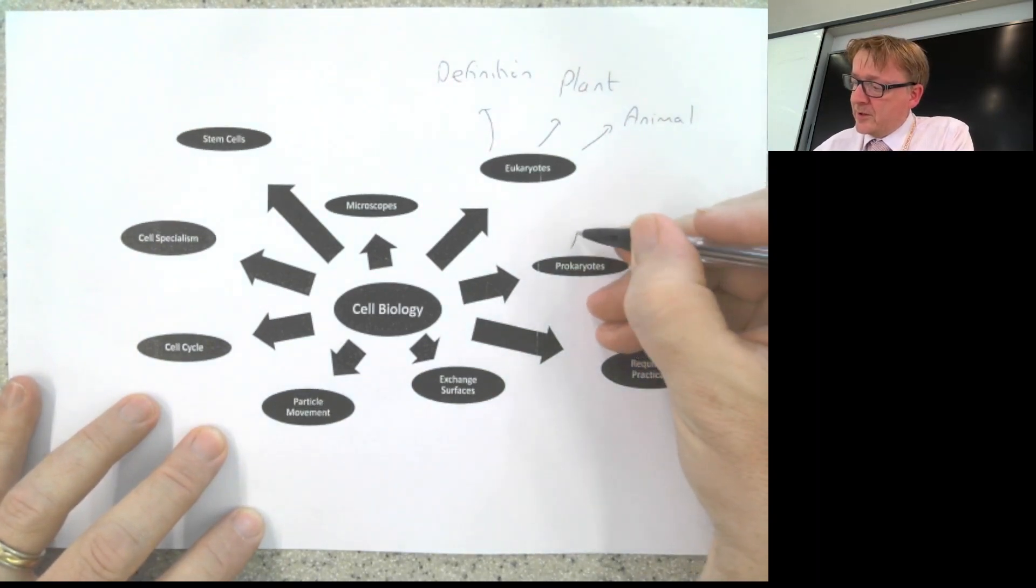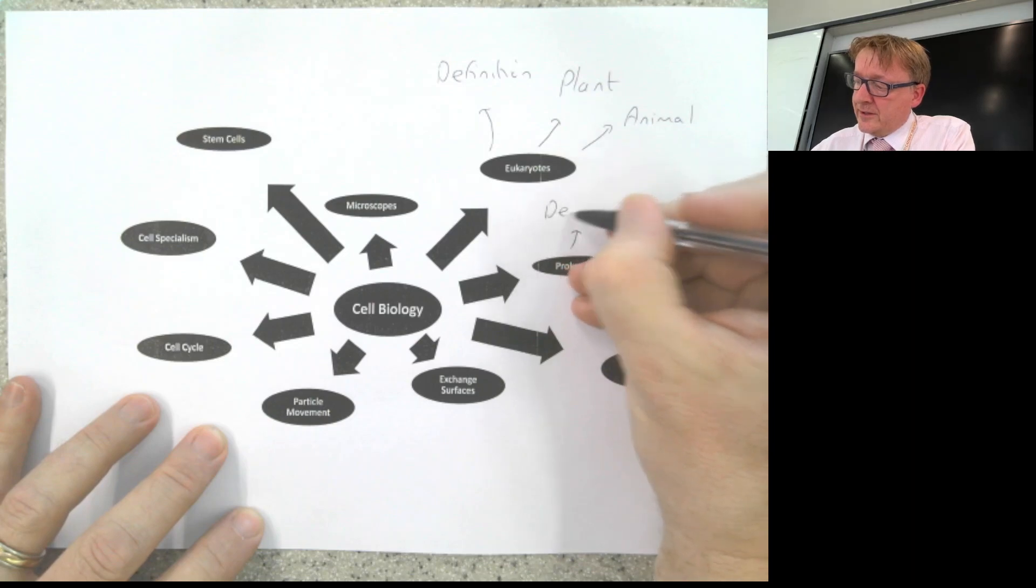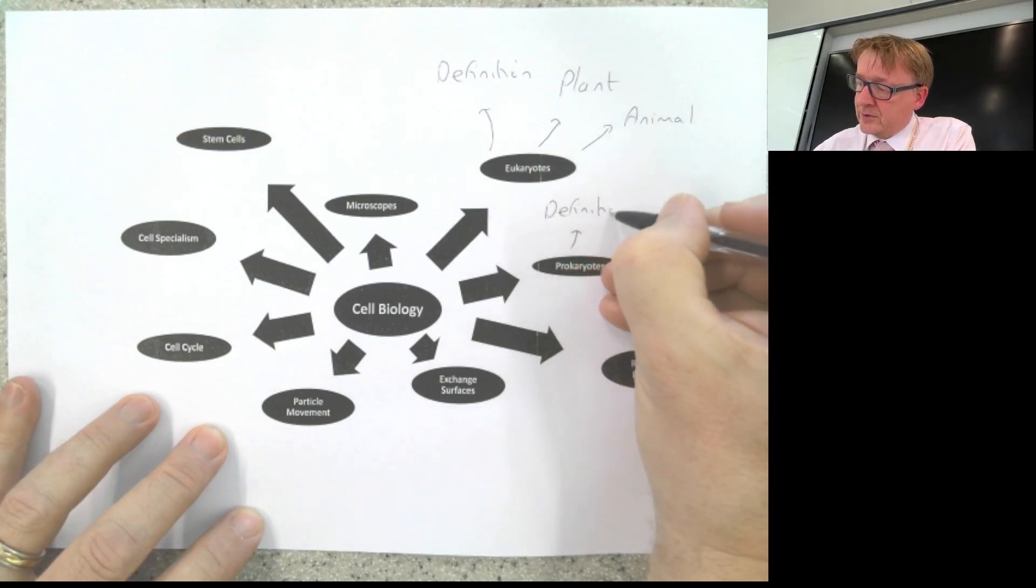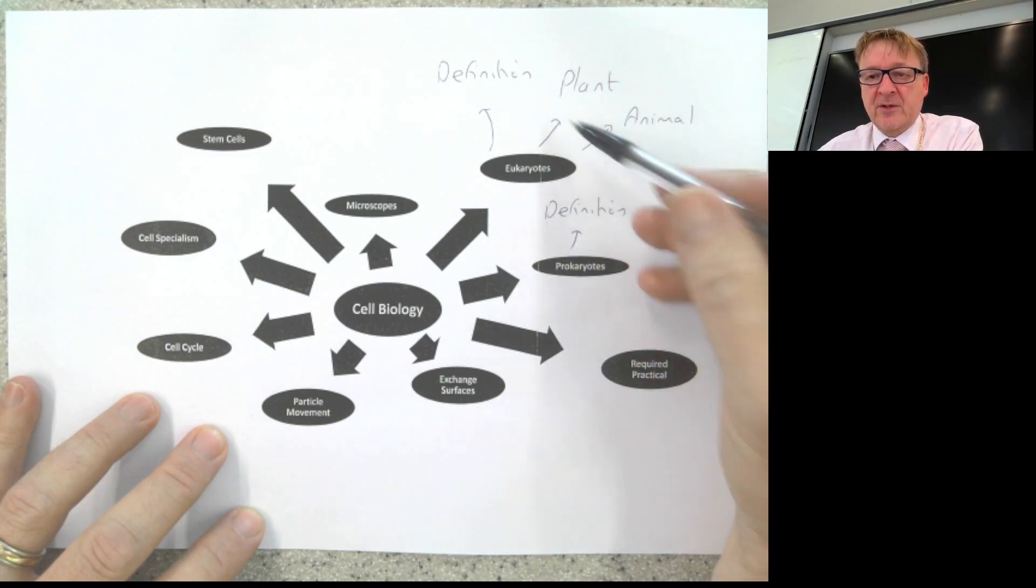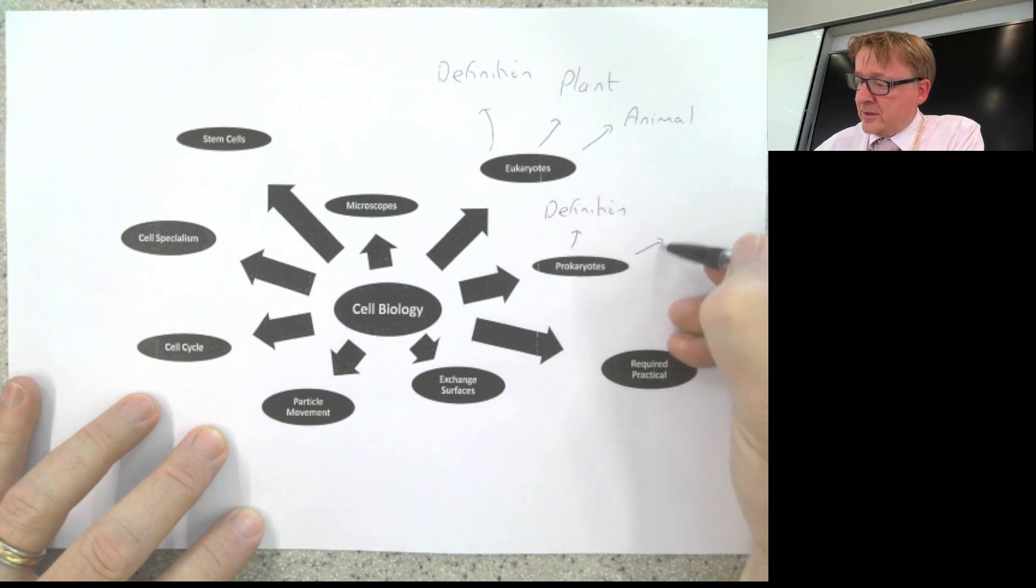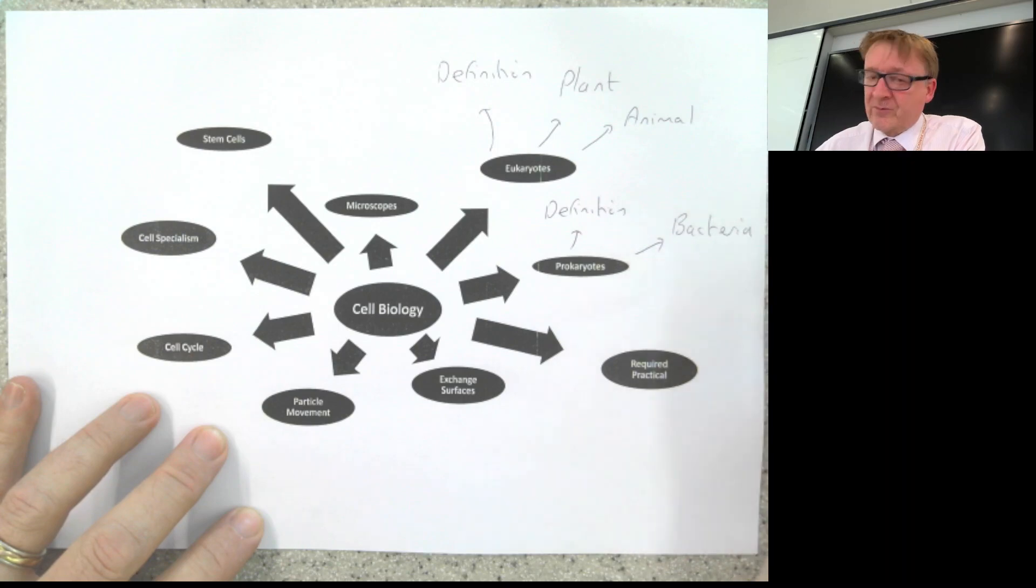Next, prokaryotes. You need a definition of what a prokaryote is—the opposite of eukaryote, where it has no nucleus and no membrane-bound organelles. The main example is bacteria. You need to know the structure and function of each individual part. For example, some have flagella, which are for movement.